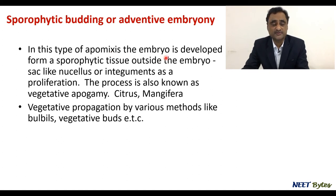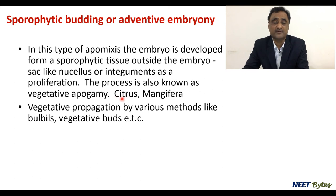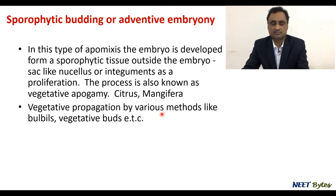Now let's talk about sporophytic budding, or adventive embryony. In this type of apomixis, the embryo develops from sporophytic tissue outside the embryo sac. Earlier in recurrent and non-recurrent types, we discussed only tissues within the embryo sac. Here, sporophytic tissue outside the embryo sac — such as the nucellus or integuments — develops into an embryo. This is called adventive embryo or sporophytic budding, and a typical example is observed in citrus and mango.